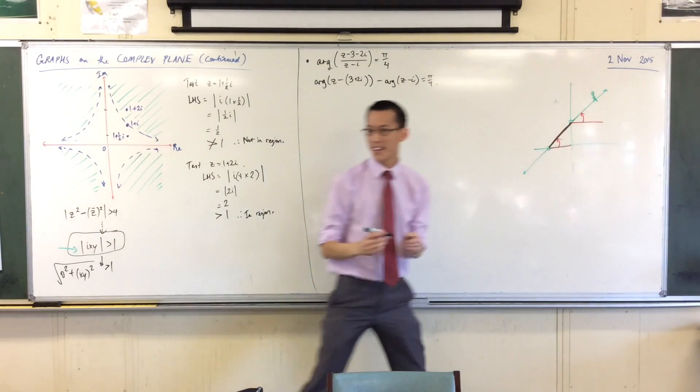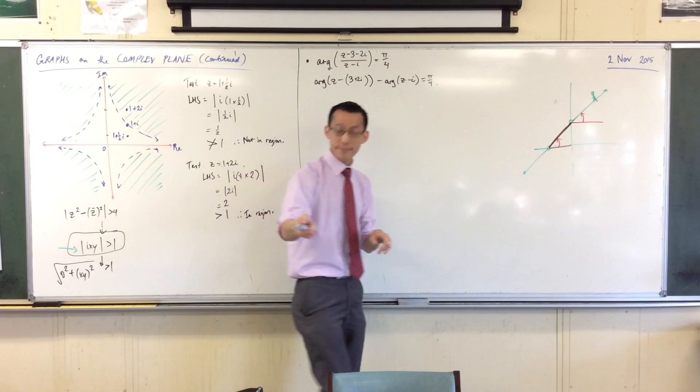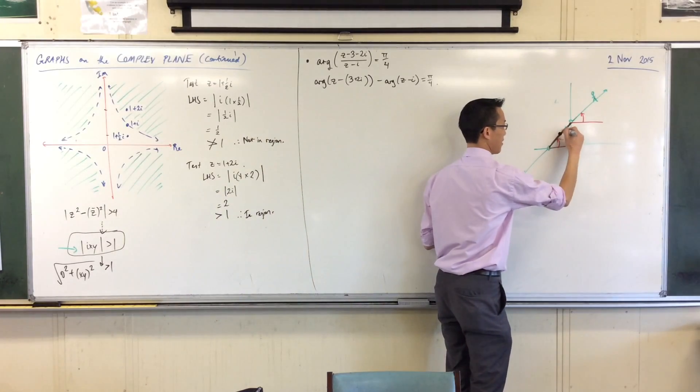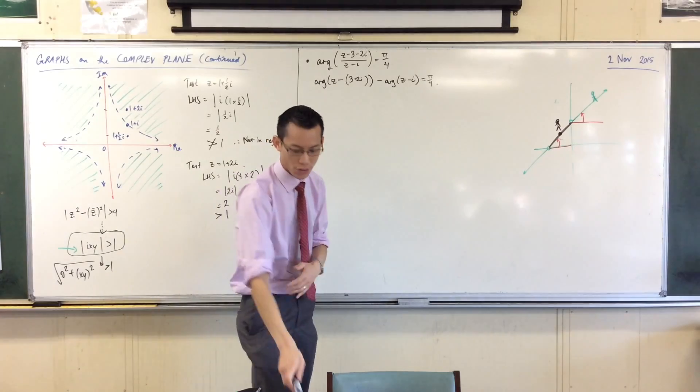Because it's 180 degrees. Like, when you take the top one minus the bottom one, it will be 180 degrees. Because from where you're measuring it from, it's 180 degrees. Good, good, good.